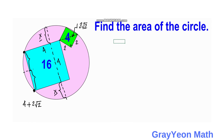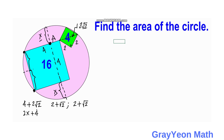The second chord is therefore 2x plus 4. For the first chord, since it is divided into two equal parts by the bisector, each segment is 2 plus square root of 2. For the second chord, the two segments at the intersection point A are x plus 4 and x.